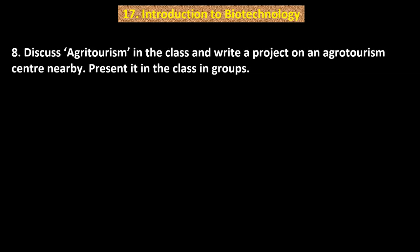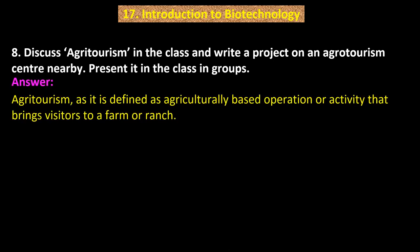Question number 8. Discuss agrotourism in the class and write a project on an agrotourism center nearby. Present it in the class in groups. Agrotourism is defined as an agriculturally based operation or activity that brings visitors to a farm or a ranch.